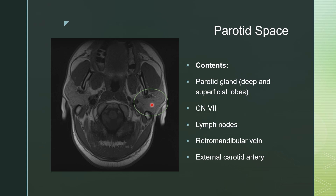When you see a lesion in the parotid space, you think of primary parotid tumors, both benign and malignant. You think of neurogenic tumors that can involve the facial nerve. You have lymph nodes, which can be primary intraparotid or they could be metastatic lymph nodes from, say, a squamous cell carcinoma of the scalp. You can have a vascular lesion involving the retromandibular vein or the external carotid artery.